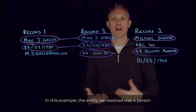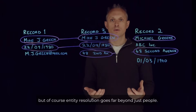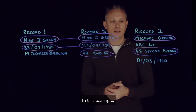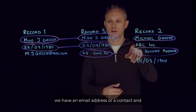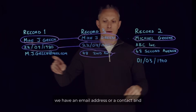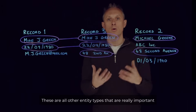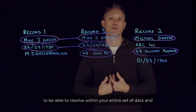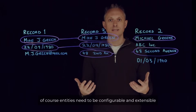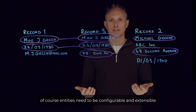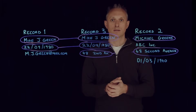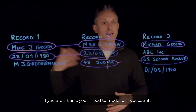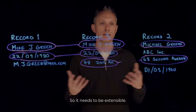In this example, the entity we resolved was a person. But of course, entity resolution goes far beyond just people. We also have a business, an email address or contact, and an address — all other entity types that are really important to resolve within your entire set of data. And entities need to be configurable and extensible for your business use case. If you're an insurer, you'll need to model vehicles. If you're a bank, you'll need to model bank accounts. So it needs to be extensible.